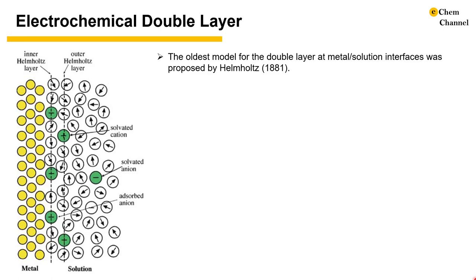Helmholtz proposed the oldest model for the double layer at the metal solution interface in 1881. He suggested that the excess charge on the metal attracts the same number of counter ions to the interface. The two opposing layers are separated by a distance which determines the capacity.